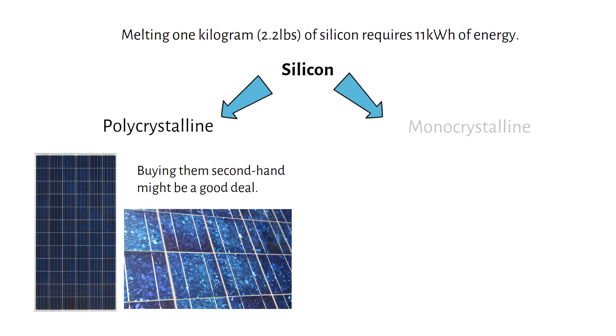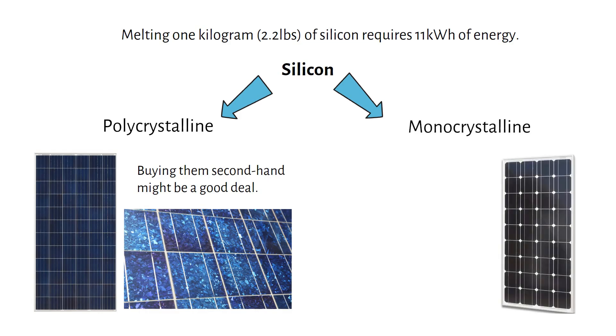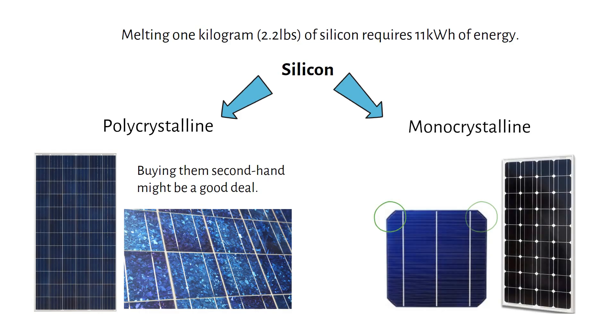Then we have monocrystalline panels. These have rounded cell edges. They're made from a single crystal silicon pulled from a molten bolt. They're more efficient than polypanels. To put it simply, if you compare a 100W polypanel to a 100W monopanel, the polypanel will be physically larger. These two are the basic cell types. Everything else I'll show you is a technology upgrade on the monocrystalline cell.